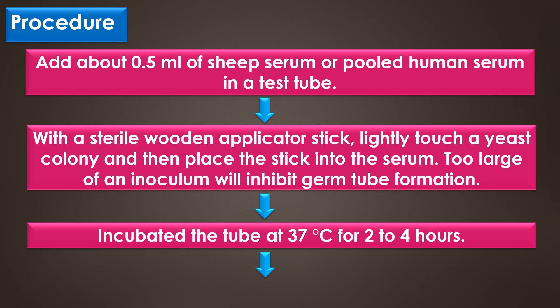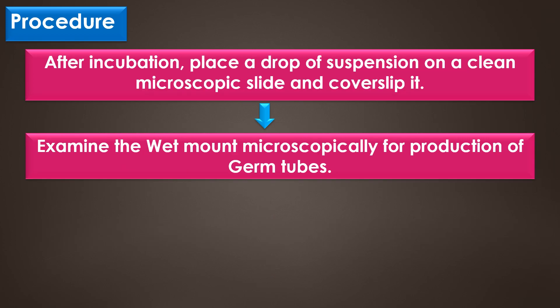Incubate the tubes at 37 degrees Celsius for 2 to 4 hours. After incubation, place a drop of suspension on a clean microscopic slide and coverslip it. Finally, examine the wet mount microscopically for production of germ tubes.